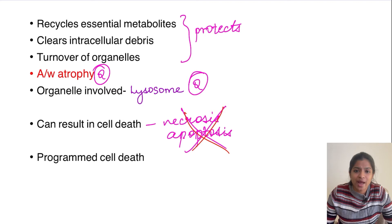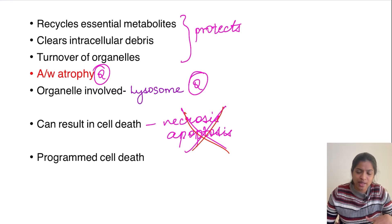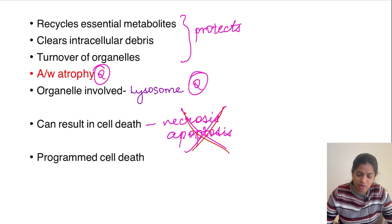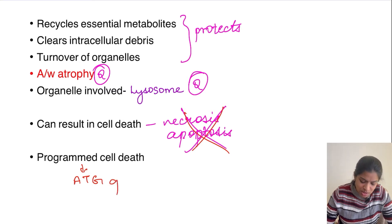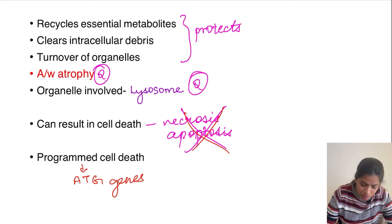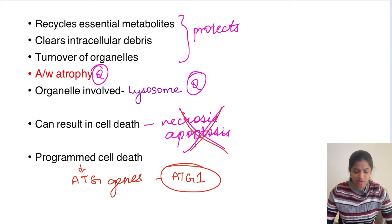This is a programmed cell death, like other forms of cell death except necrosis. It involves certain set pathways and signaling molecules, and is controlled by certain genes called ATG genes — ATG standing for autophagy. ATG genes are the ones regulating this, so it is called a programmed cell death. The most important gene related to autophagy is ATG1.